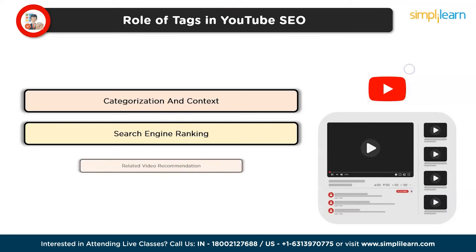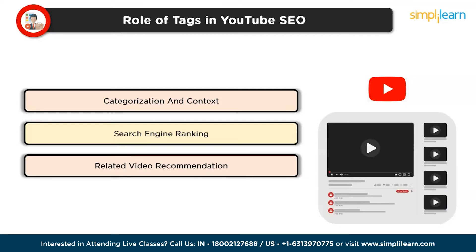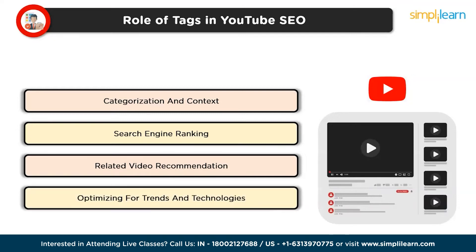Third is related video recommendations: YouTube uses tags to determine which videos are related to each other. Well-chosen tags can lead to your video being suggested to viewers watching similar content, expanding your potential audience. Finally, tags can be adjusted to align with current trends or popular topics. This can help your video ride the wave of trending searches, making it more likely to be seen by a larger audience.